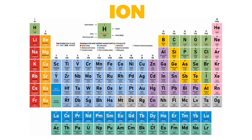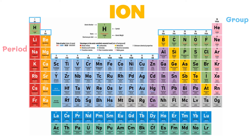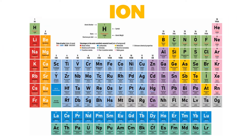The elements in the periodic table are arranged according to increasing atomic number. The rows are called periods, and the columns are called groups, which are numbered 1 and 2 respectively. The group number in the periodic table gives us the number of valence electrons in its outermost energy shell. For example, carbon, which belongs to group 4A, has 4 valence electrons.